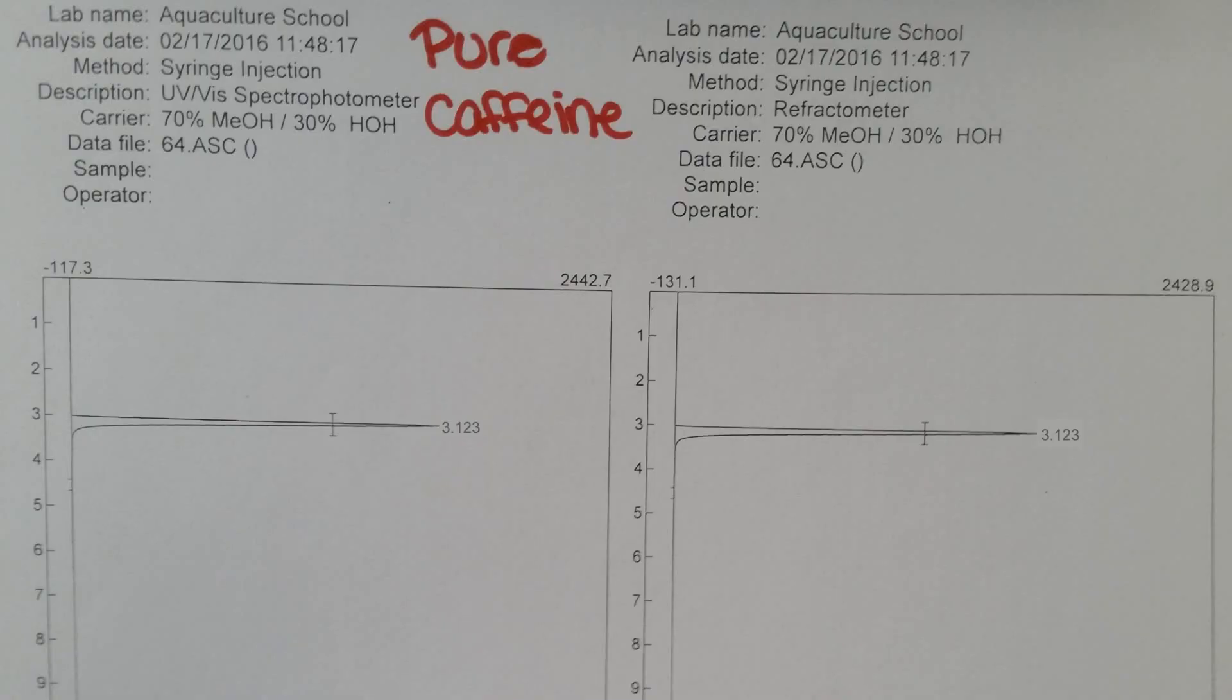To identify this was indeed the caffeine, a pure sample of caffeine was run. The single peak occurred at 3.123. Although this is a little bit different than the ones we ran, we can successfully identify that it was caffeine in the other samples.